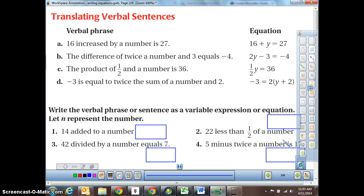So this is very similar to what we did before. We've got a verbal phrase, and then we turn it into a number equation over here. So 16 increased by a number is 27. Here's this new part. When we say is, that's another word for equals. So 16 increased by a number equals 27. Therefore, we turn it into 16 plus y equals 27.